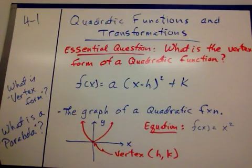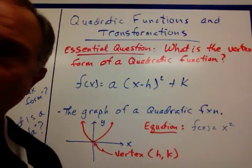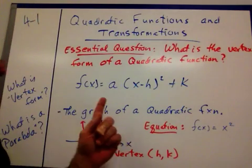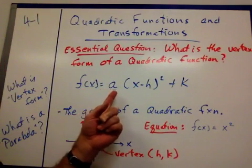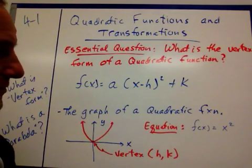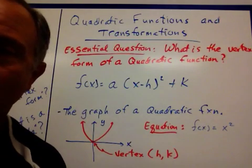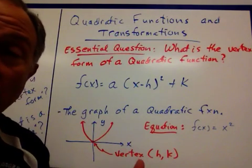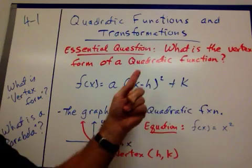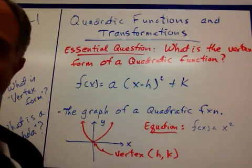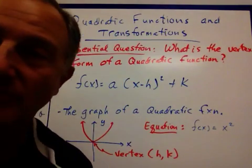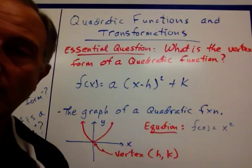Our essential question is, what is the vertex form of the quadratic function? And here it is right here, f of x equals a times the quantity x minus h squared plus k. Should look real familiar. It would just look like absolute value if you just change those parentheses to absolute value and took that 2 out of there. And you're going to see a lot of similarities in the way the two operate.